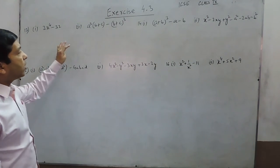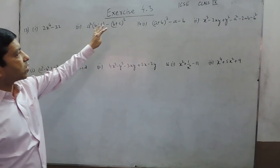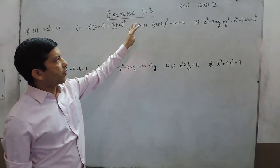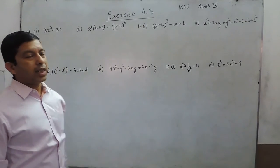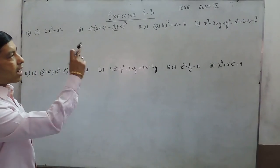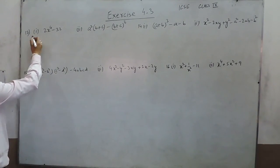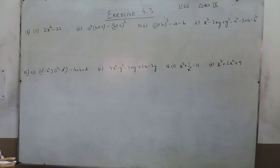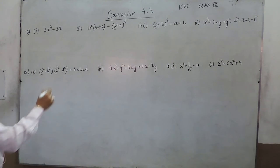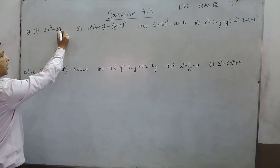Hello everyone, in today's class we are solving exercise 4.3, class 9, NCERT. In question number 13, it is 2x to the power 4 minus 32.